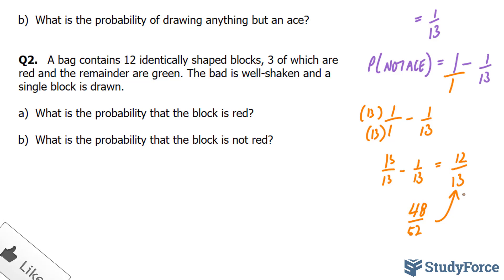a bag contains 12 identical shaped blocks, 3 of which are red and the remainder are green. The bag is well shaken and a single block is drawn. What is the probability that the block is red? So we are told that there are 12 blocks and 3 of which are red. So 3 out of 12 blocks are red. A quarter of them are red, while 3 quarters of them are green. So this is the amount of red, and 3 quarters is green. So to answer A, what is the probability that the block is red? Well, there's a quarter chance that you will pick a red block.